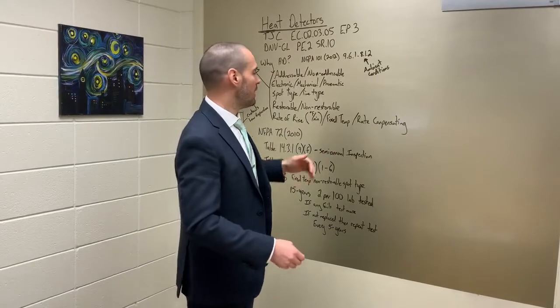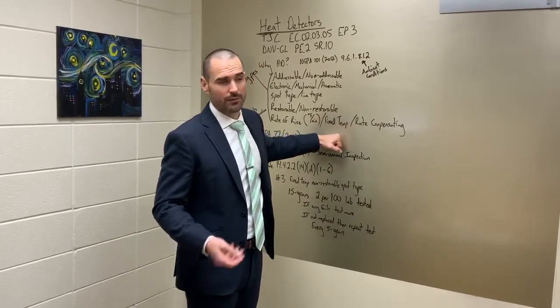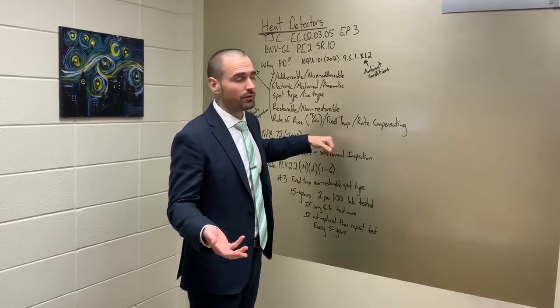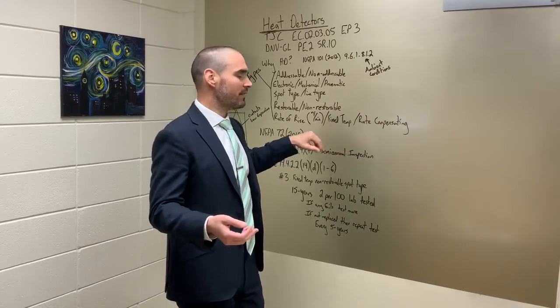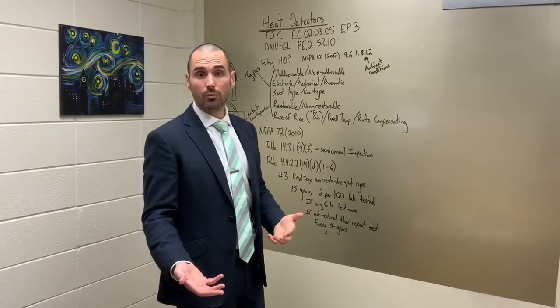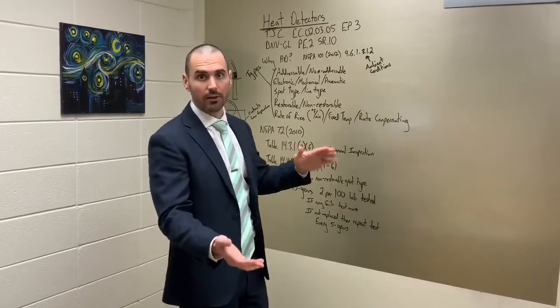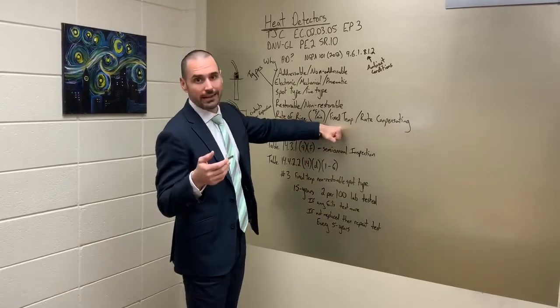Fixed temperature, it's a set temperature, typically 135. If you're in central plants, you may have a 200 degree fixed temp head, but it is just a set temperature and it doesn't go off as frequently as a rate of rise because we have thermal lag, which prevents it from going off until the ambient conditions around it are truly that temperature.